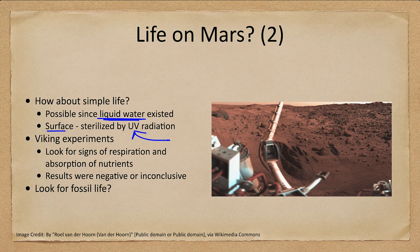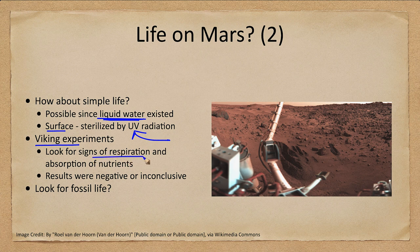It doesn't take much to protect the layers below, however. A thin layer of dirt is very good at absorbing ultraviolet light, so anything below the surface is shielded. When we look for life, we don't look on the surface — we dig below. The Viking craft dug samples to test for signs of respiration and absorption of nutrients. The results were either negative or inconclusive — nothing we could say for sure was a sign of life.